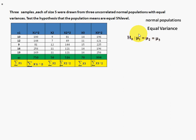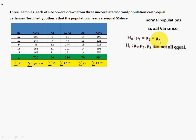Now we set up the hypotheses. H0: the three populations have equal means, i.e., μ1 = μ2 = μ3. H1: μ1, μ2, μ3 are not all equal. If even one pair is unequal, we reject H0. All three means must be equal to accept the null hypothesis. The level of significance is 5%.